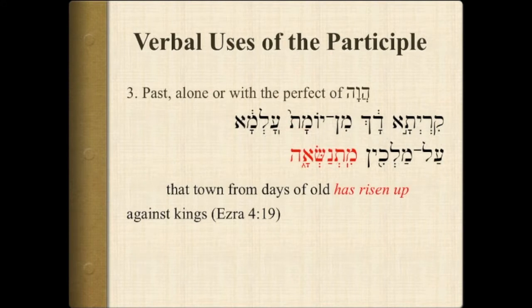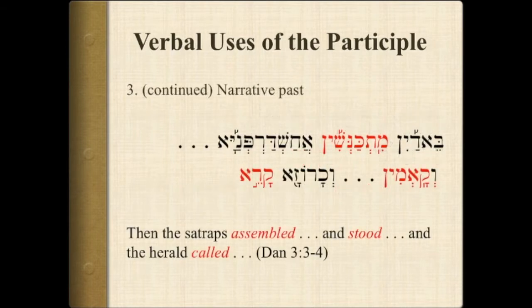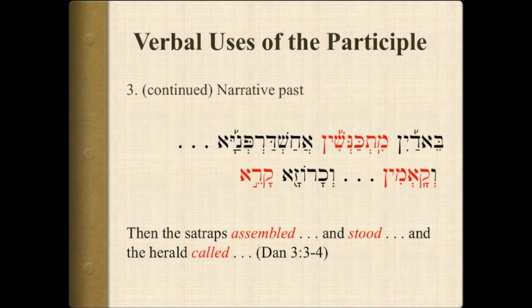The participle can indicate various times in the past, either alone or with the perfect of hava: "that town from days of old has risen up against kings." It became very common for the participle to be used as a narrative past, where you have sequential actions. There is no vav consecutive in Aramaic as there is in Hebrew, and therefore the participle is often used to indicate sequences of verbs or actions: "then the satraps assembled and stood and the herald called." All the forms are participle forms.